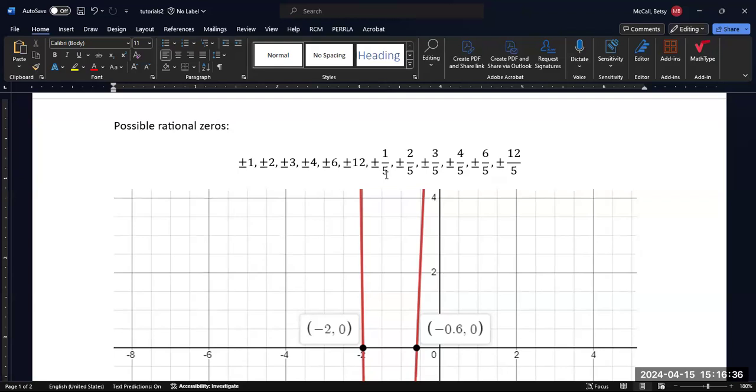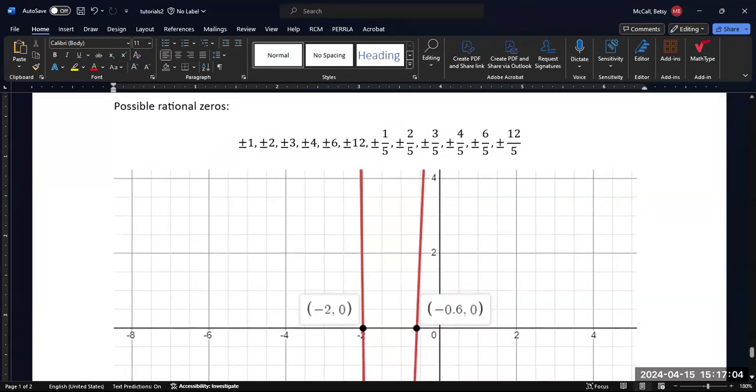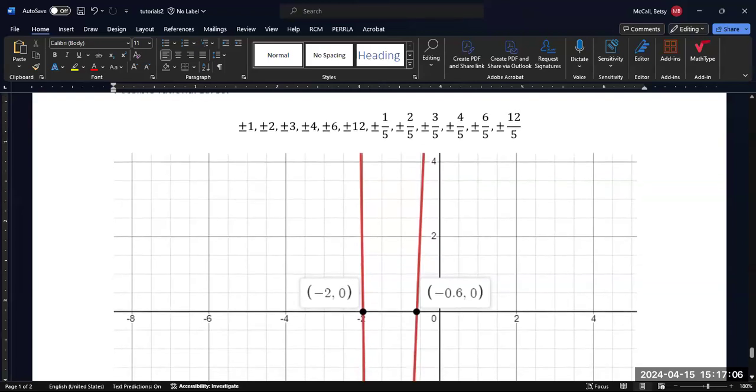Whereas if we see one that kind of looks like we think maybe there's a 5 as a factor, but 5 is not in our list, then it's not actually 5. It's some kind of non-rational real thing that we're getting from our quadratic formula or some other kind of formula. And therefore, it's not one of our rational zeros, and it won't really help us factor the equation per se.